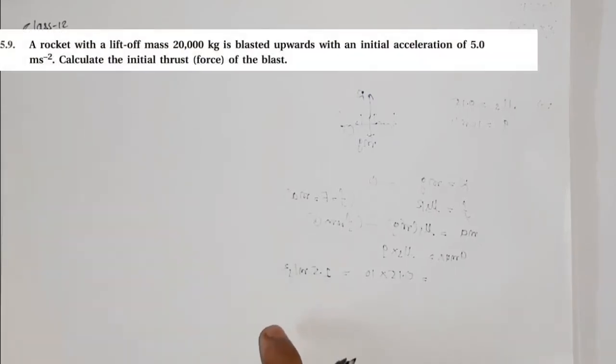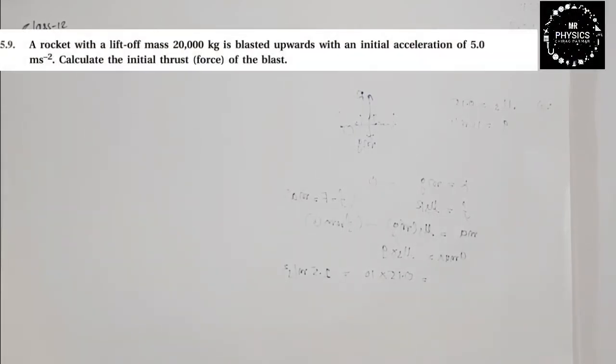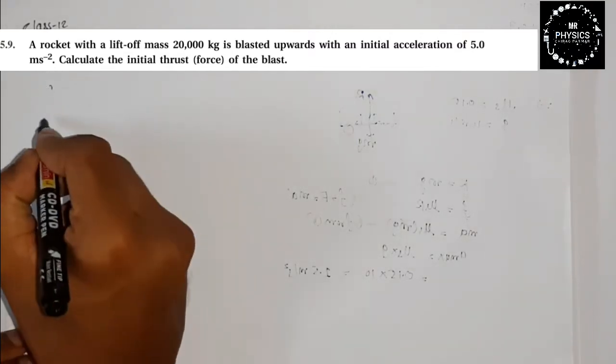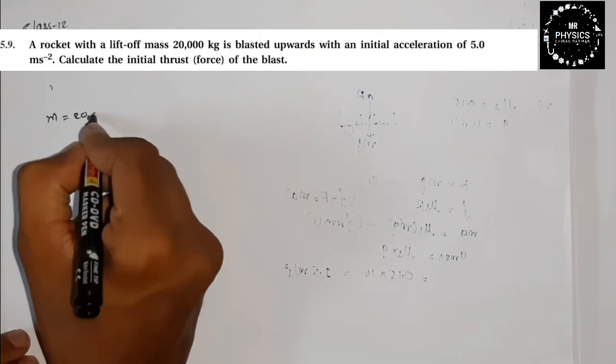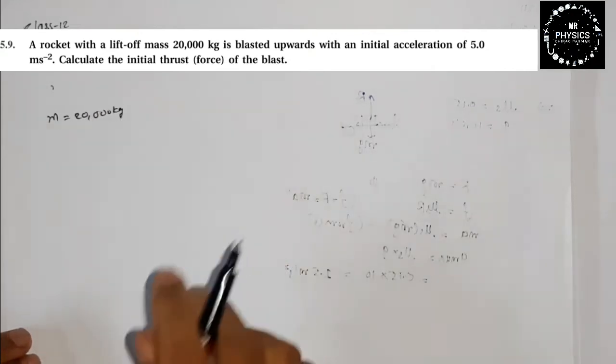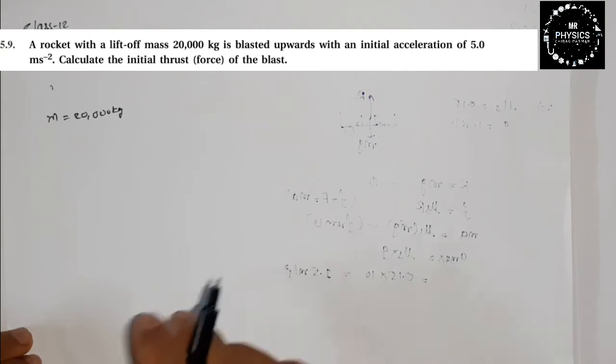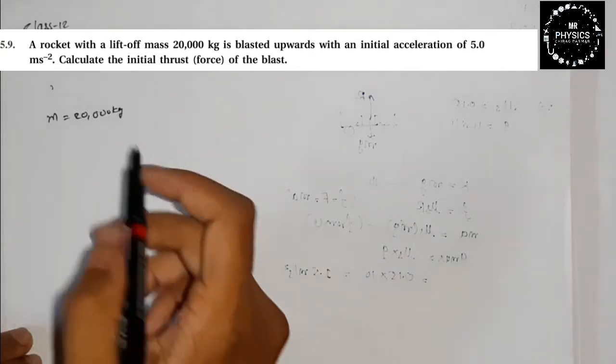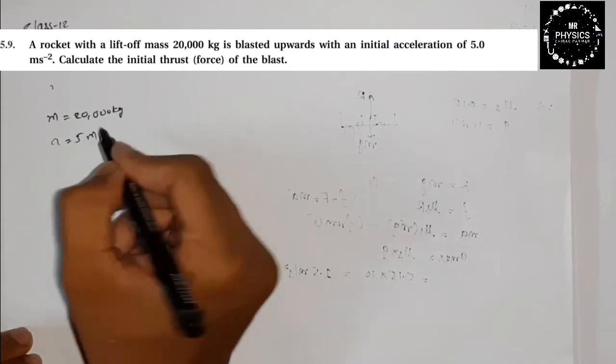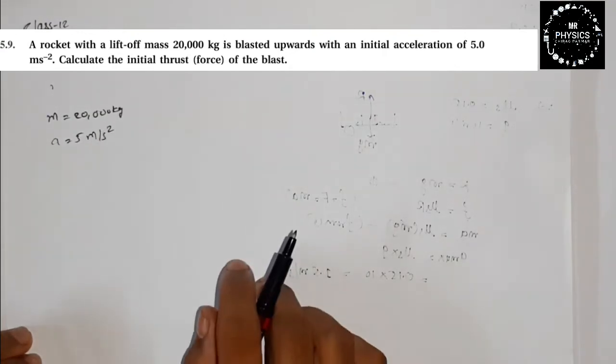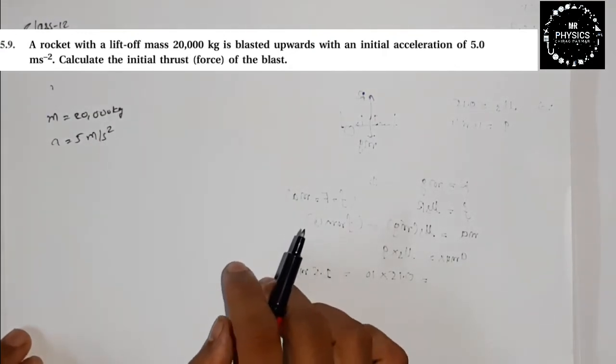Hello students, Exercise 5.9. You can see they are talking about a lift example - sorry, lift means the rocket. A rocket with lift-off mass 20,000 kg, the mass is 20,000 kg, is blasted upward with initial acceleration of 5 meter per second squared.